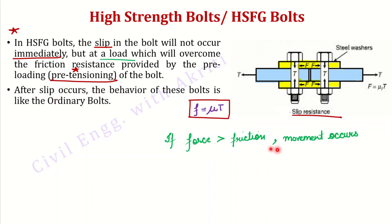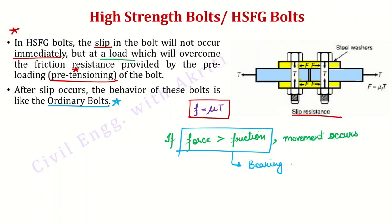After the friction force is overcome and slip occurs, the bolt will behave like an ordinary bolt. After that condition, the resistance will come from bearing and shear. Before that, resistance came from friction. So to summarize: the maximum resistance we focus on for friction type bolts is friction, with a small additional amount from bearing.